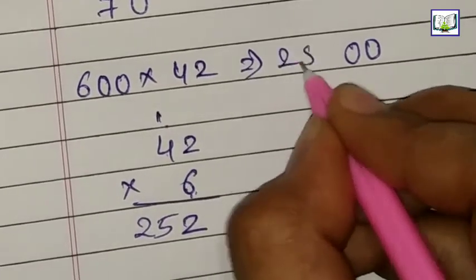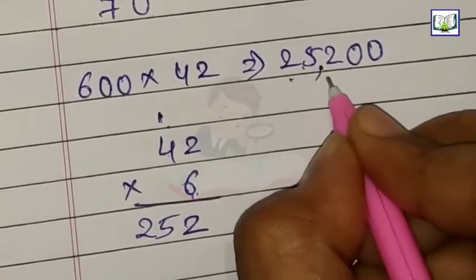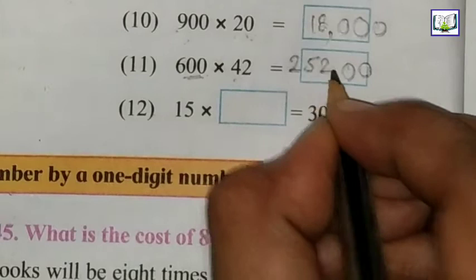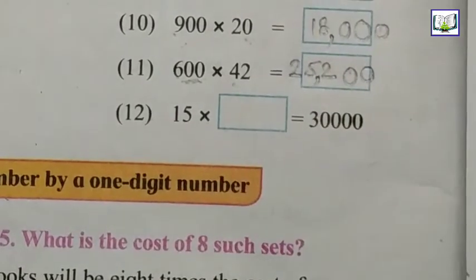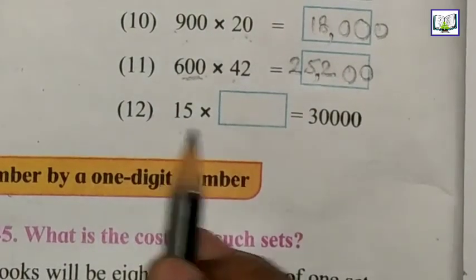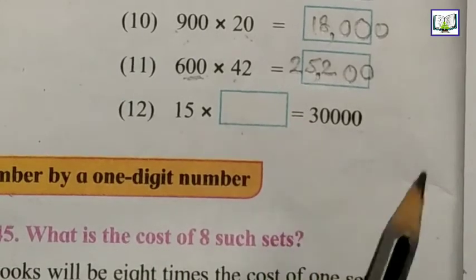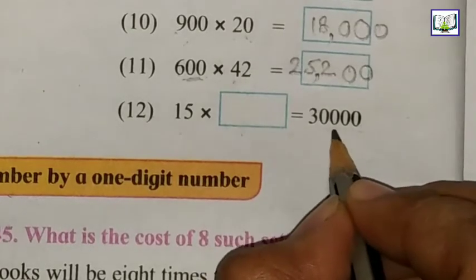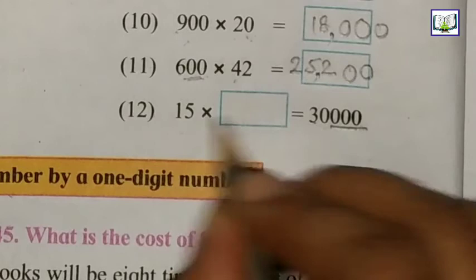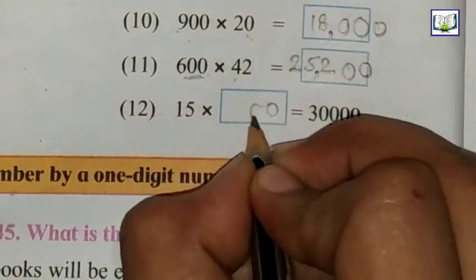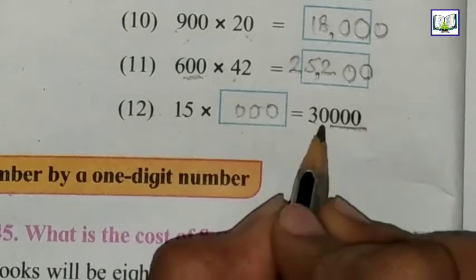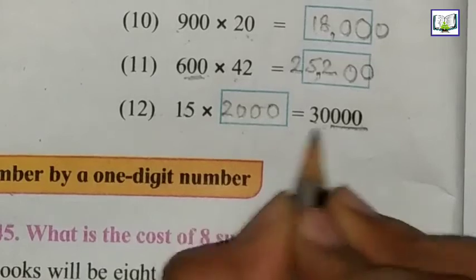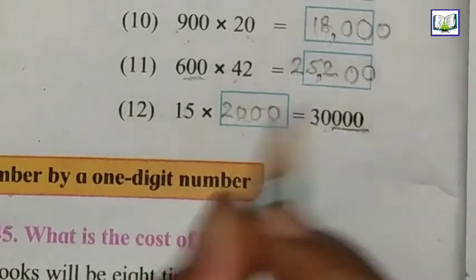So this becomes 25, so the answer is 25,200. Now 15 into 2000. How many zeros are here? 1, 2, 3, 4. So we will take 3 zeros, because these are 2 digits, so we have written 3 zeros. Now on the table, 15 twos are 30, and 3 zeros as it is. The answer is 30,000.